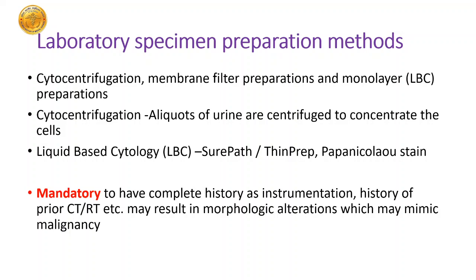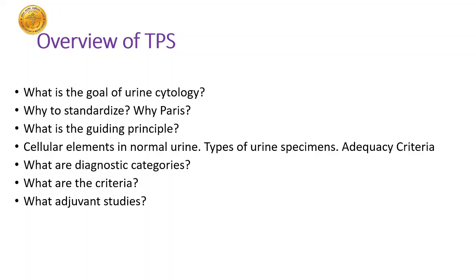The various laboratory specimen preparation methods available include cytocentrifugation, membrane filter preparation (also called Millipore), and several monolayer or liquid-based cytology preparations. In cytocentrifugation we take small aliquots of urine, centrifuge them, concentrate the cells, and examine the sediment after staining. In liquid-based cytology, techniques like SurePath and ThinPrep involve Papanicolaou staining. As for the rest of pathology, it is mandatory to have a complete history — history of instrumentation, prior chemo- and radiotherapy — as all these may result in cytomorphologic alterations which may mimic malignancy.